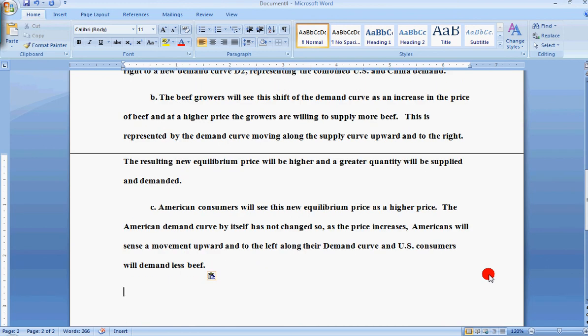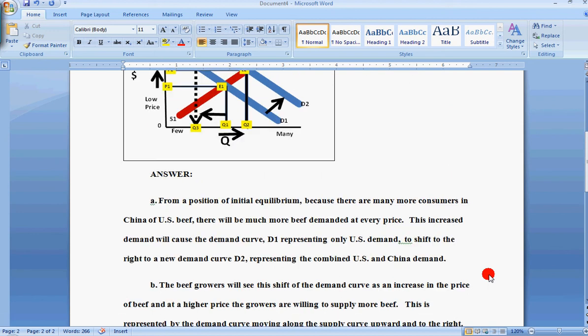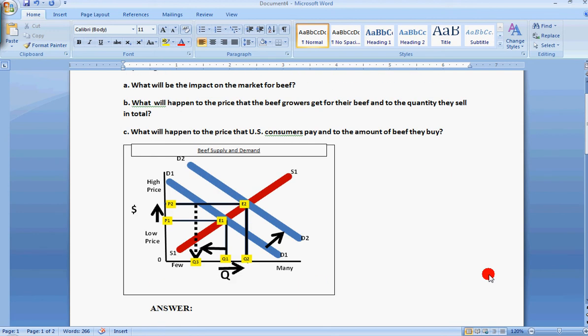American consumers will see this equilibrium price as a higher price. The American demand curve by itself has not changed. So as the price increases, Americans will sense a movement upward and to the left along their demand curve, and U.S. consumers will demand less beef. And again, that is demonstrated by the graph.